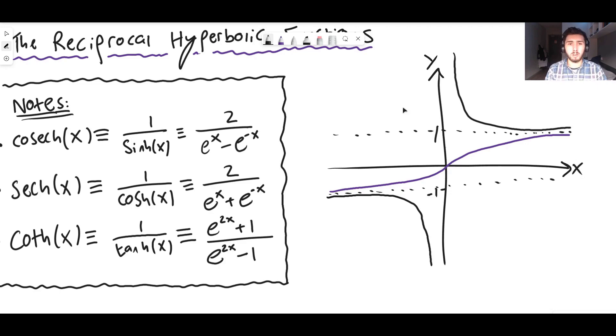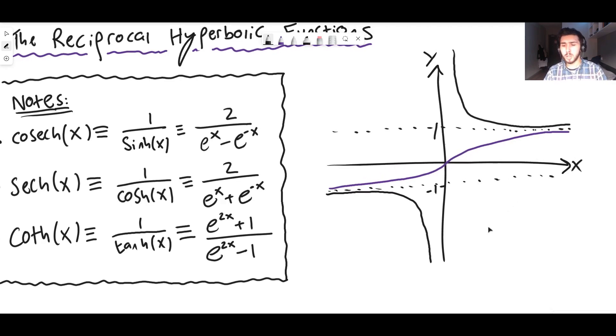And you get these graphs from just looking at the behavior of two over e to the x minus e to the minus x as x gets big, as x gets small, near to zero, et cetera, and you can plot these graphs out. So that's the graph of coth. So you can see all of those there. Okay brilliant.